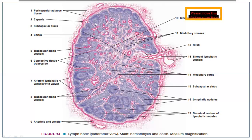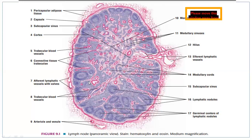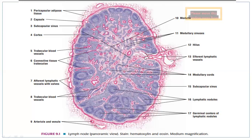The paracortex lies deeper than the outer cortex. Going further inside is the medulla, where collections of lymphatic tissue form medullary cords, with medullary sinuses in between. The filtered lymph is collected at the hilum and pumped out through efferent lymphatic vessels. At medium magnification, you can see the capsule, subcapsular sinus, lymphatic nodules in the cortex, and the medulla with medullary cords and sinuses.